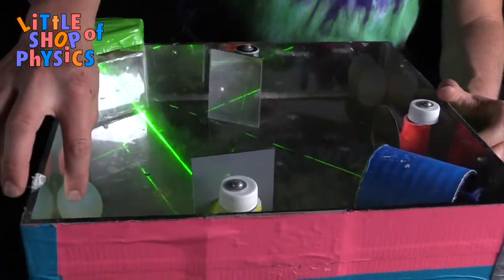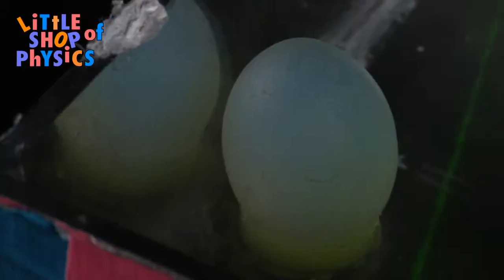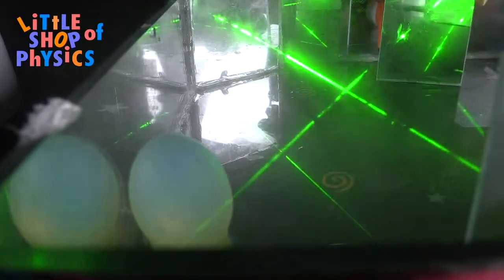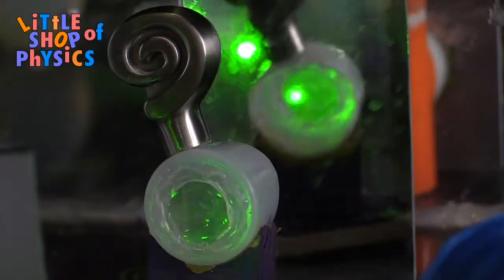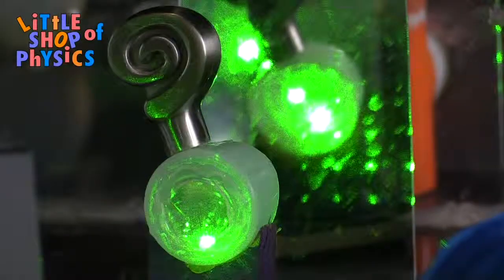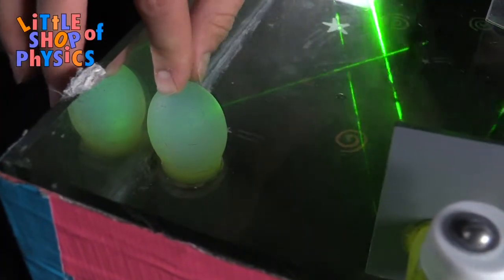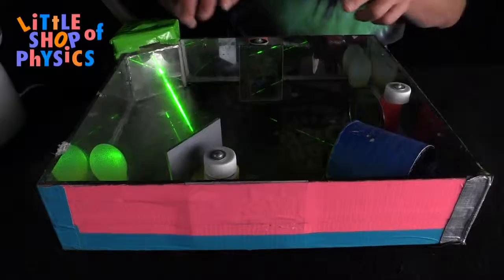We have this opalescent egg right here, and basically what it does is it kind of catches the light and scatters it out in every direction. If you don't have one of these, we've used glass chess pieces or just any piece of solid glass or plastic that's somewhat translucent.